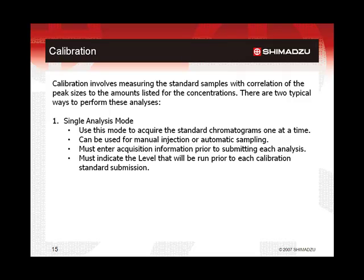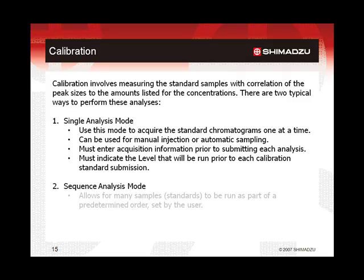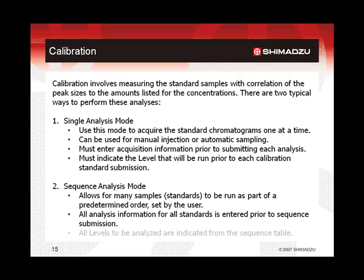The sequence analysis mode allows for many samples, including calibration standards and unknowns, to be analyzed as part of a predetermined series defined by the user. The sequence table contains all of the acquisition information for all samples, including the standards. With an automatic sampling system, this permits the samples to be run without immediate interaction from the user. All standard level designations for fully automated calibration should be entered before running the sequence.